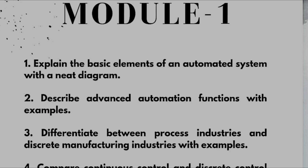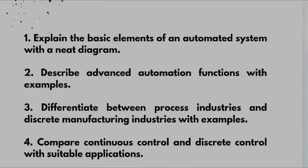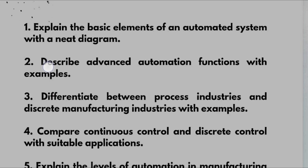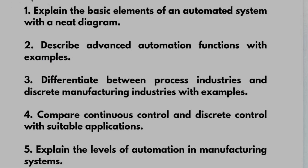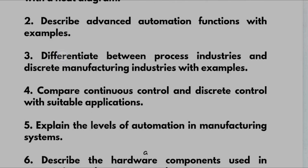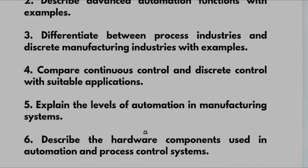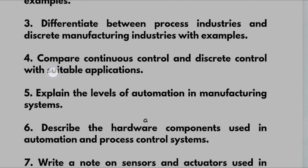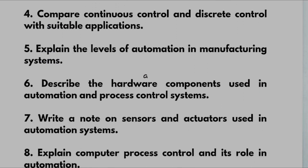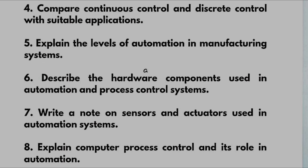Explain the basic elements of an automated system with a neat diagram. Describe advanced automation functions with examples. Differentiate between process industries and discrete manufacturing industries with examples. Compare continuous control and discrete control with suitable applications. Explain the levels of automation in manufacturing systems. Describe the hardware components used in automation and process control systems. Write a short note on sensors and actuators used in automation systems.